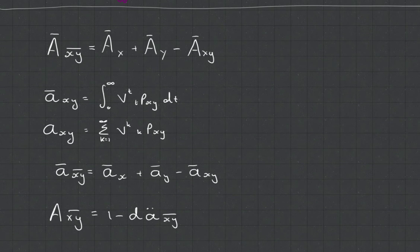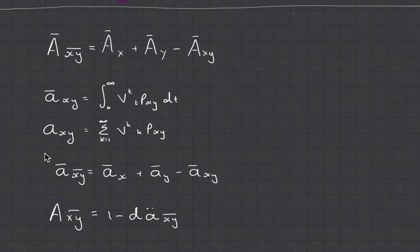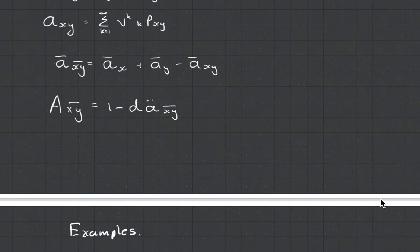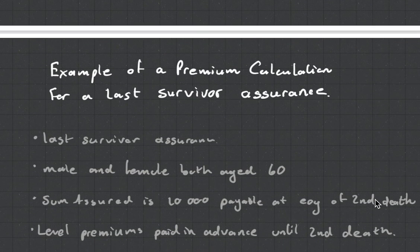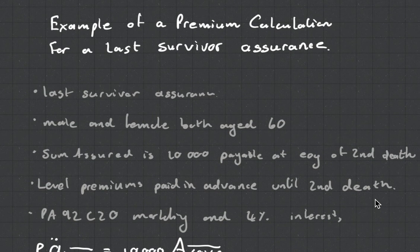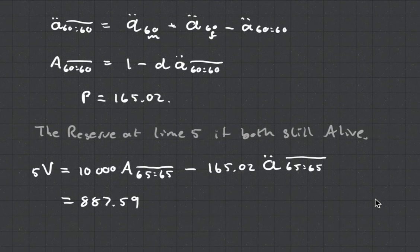Here's another very important page - you might want to take a picture of this. These are the relationships, and what's very interesting over here is that it resembles a joint probability function. The probability that X and Y both die is equal to X dying plus Y dying, less both dying. Take a look at these values - they should kind of speak for themselves. And then there is an example right at the end. It's very, very easy, this chapter.